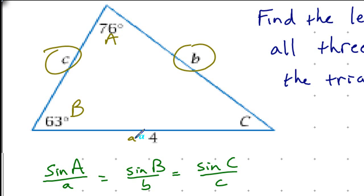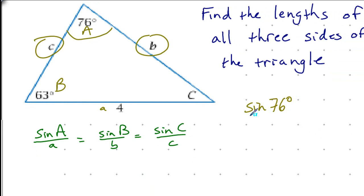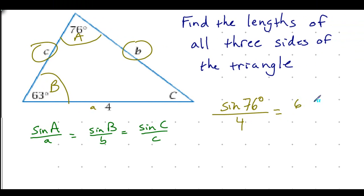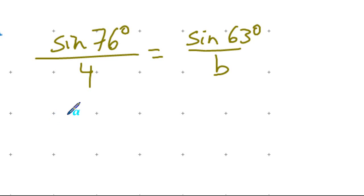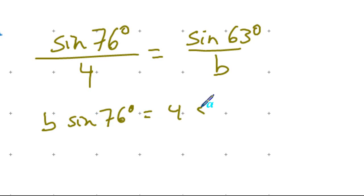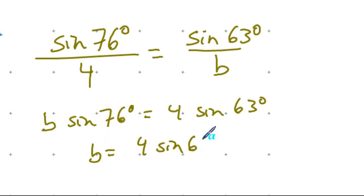Using the Law of Sines: sine of 76 degrees over 4 equals sine of 63 degrees over B. Cross-multiplying gives B times sine of 76 degrees equals 4 times sine of 63 degrees. Dividing both sides by sine of 76 degrees gives B equals 4 times sine of 63 degrees over sine of 76 degrees.